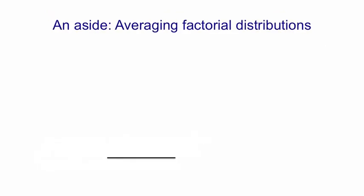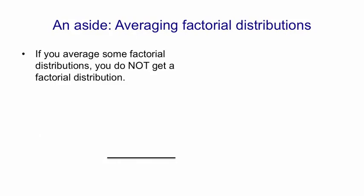Before I explain why stacking up Boltzmann machines is a good idea, I need to sort out what it means to average two factorial distributions. It may surprise you to know that if I average two factorial distributions, I do not get a factorial distribution. What I mean by averaging here is taking a mixture of the distributions: you first pick one of the two at random, and then you generate from whichever one you picked. So you don't get a factorial distribution.